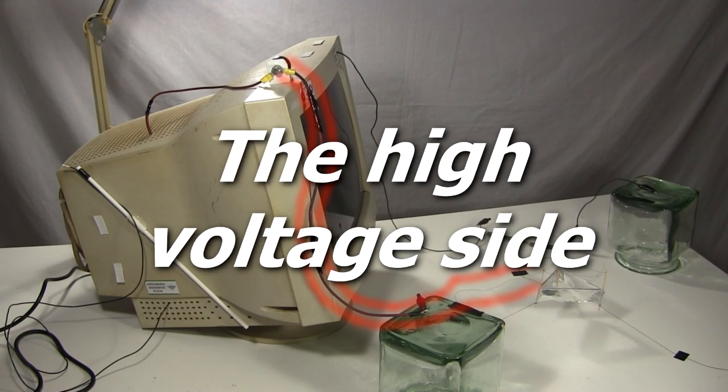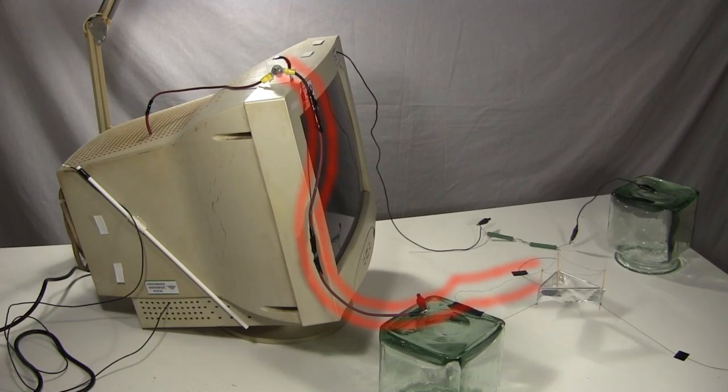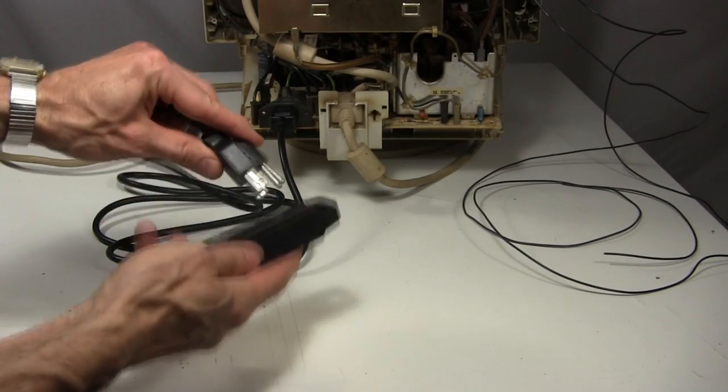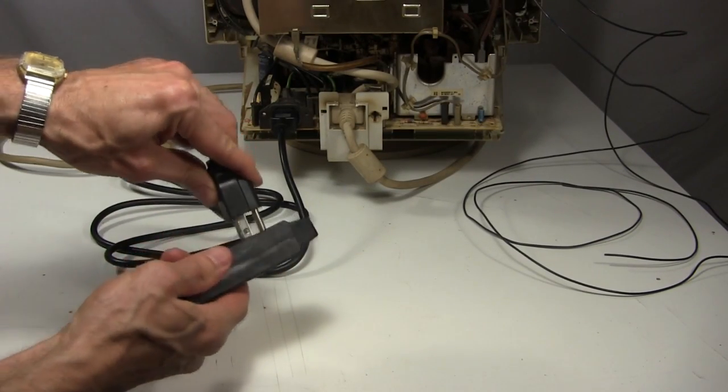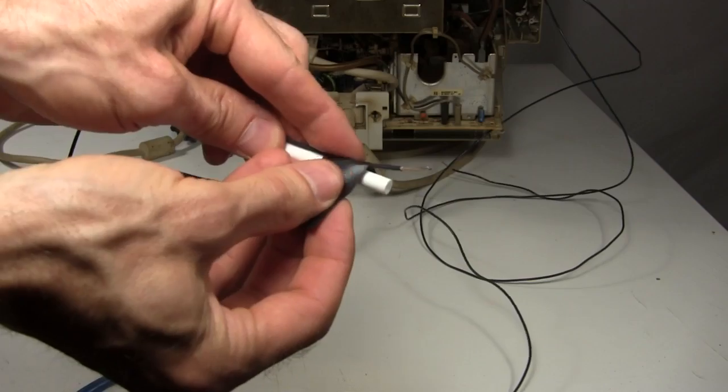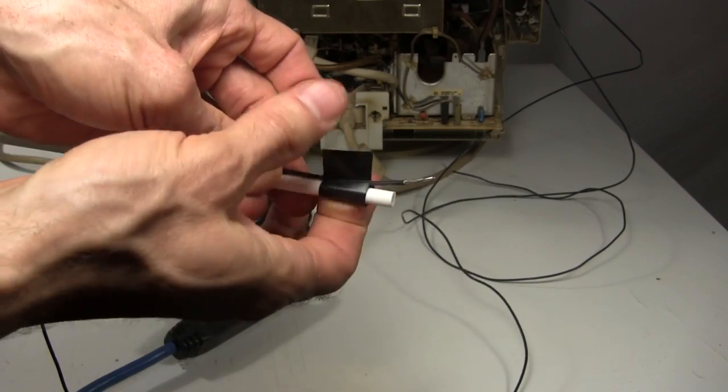Next, to work on the high voltage side. I start by making sure it's safe. Now that I have grounding wires, I plug in the monitor so that they're actually connected to earth ground, but I don't turn on the monitor. I tape one of the wires to a plastic stick.